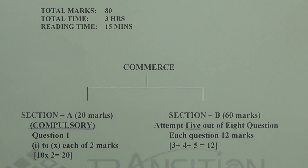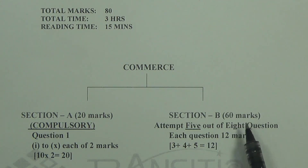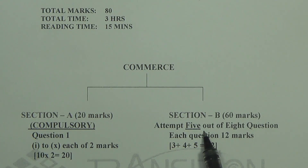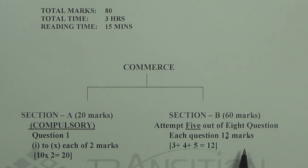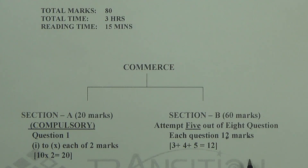Moving on to section B — it is 60 marks. You'll be given 8 questions in this section; out of the 8 you have to attempt only 5. Each question comprises of 12 marks, with a division of 3 plus 4 plus 5 equals 12. Section B is basically your long type of answers, divided into three parts. So students, please choose your questions accordingly where you can score more marks.